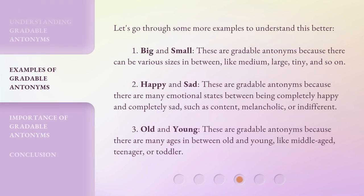Let's go through some more examples to understand this better. First, big and small — these are gradable antonyms because there can be various sizes in between, like medium, large, tiny, and so on. Second, happy and sad — these are gradable antonyms because there are many emotional states between being completely happy and completely sad, such as content, melancholic, or indifferent.